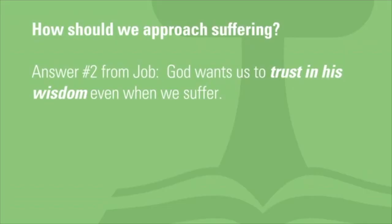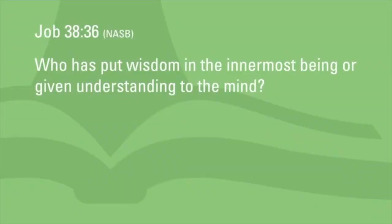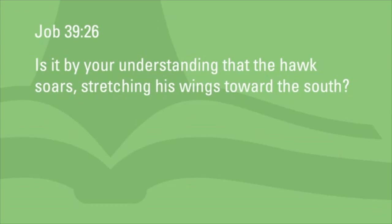Back to the question: how should we approach suffering? Answer number two from Job: God wants us to trust in his wisdom even when we suffer. When God finally speaks, his answer is basically, 'I know what I'm doing. I'm the creator — who are you to question it?' Here are two examples from the end of Job: Job 38:36 — 'Who has put wisdom in the innermost being, or given understanding to the mind?' Or Job 39:26 — 'Is it by your understanding that the hawk soars, stretching his wings toward the south?' We have to trust in God's sovereign wisdom.